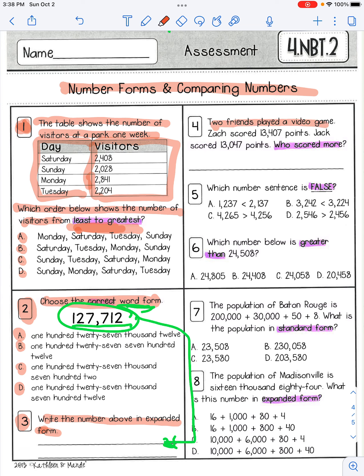Number four. Two friends played a video game. Zach scored 13,407 points. Jack scored 13,047 points. Who scored more? Who scored more? Make sure to answer in a complete sentence. Restate the question.